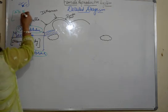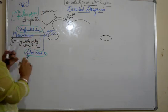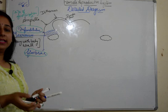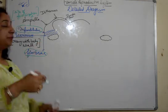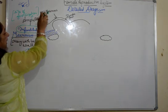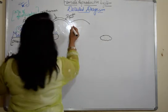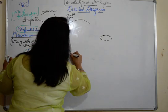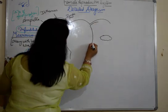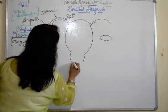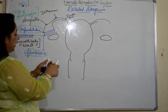The infundibulum has these fimbriae which are always in a sucking movement and have an opening known as ostium which pulls the egg inside the fallopian tube. Also, the ampulla is the site of fertilization. We say fallopian tube is the site of fertilization in junior classes, but here we specify that the ampulla part of the fallopian tube is responsible for fertilization. The egg picked up by the infundibulum moves to the isthmus and then the fundic part, after which we have the pear-shaped uterus.